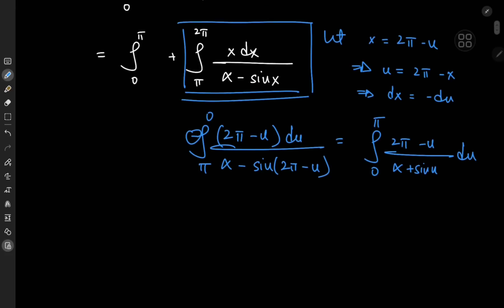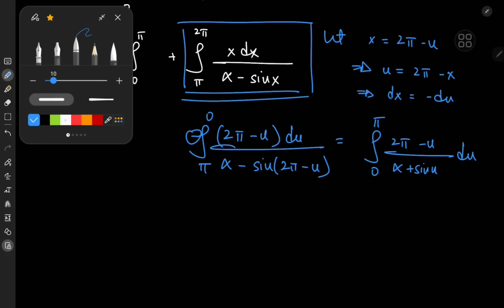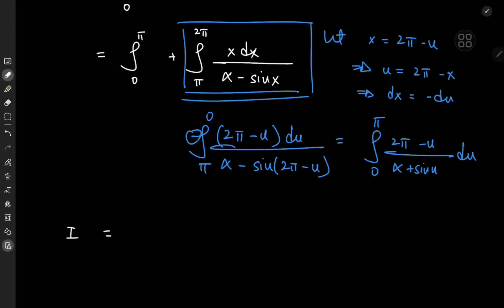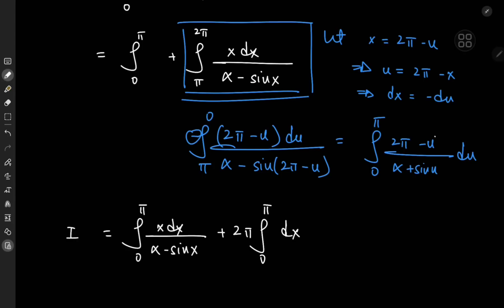Using the linearity of the integration operator, the target integral I equals the integral from 0 to π of x dx divided by (α - sin x), plus 2π times the integral from 0 to π of dx divided by (α + sin x), where I've renamed u back to x since it's a dummy variable and renaming it doesn't alter the structure.